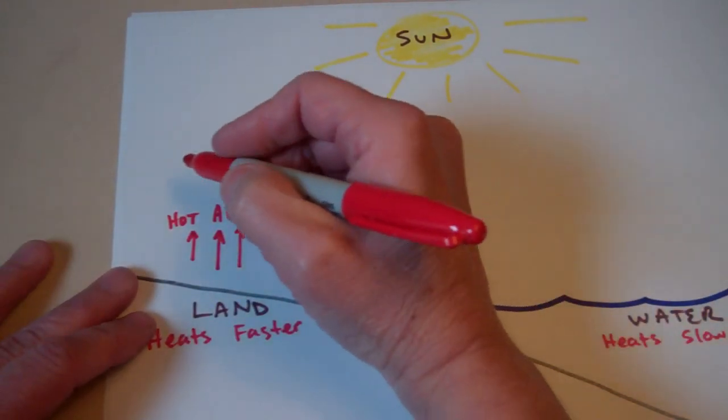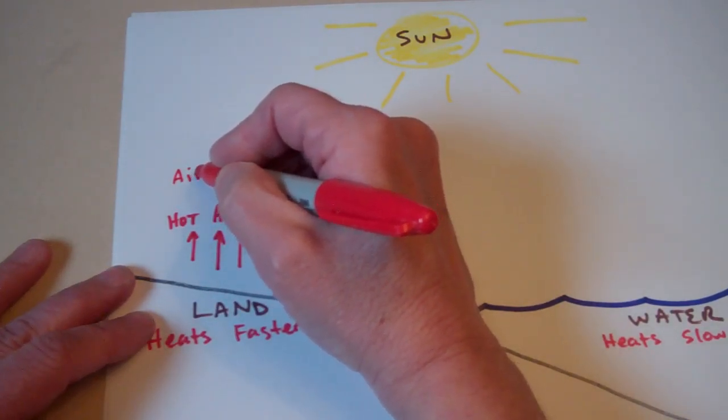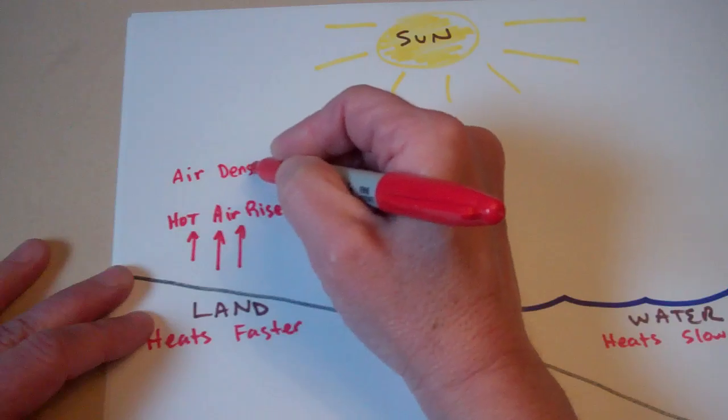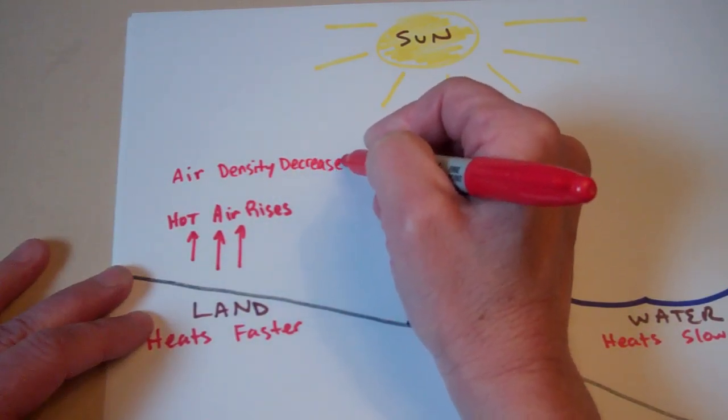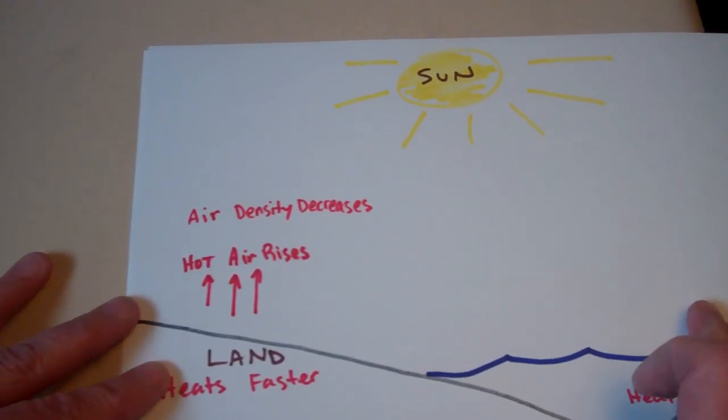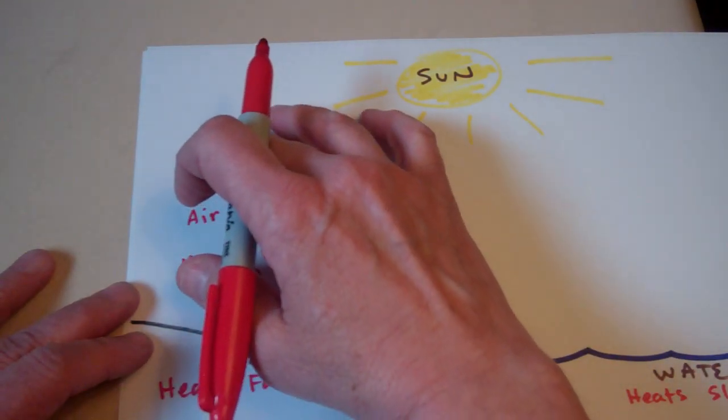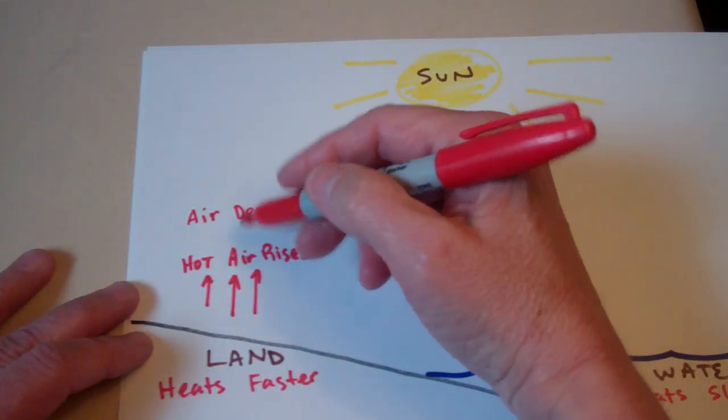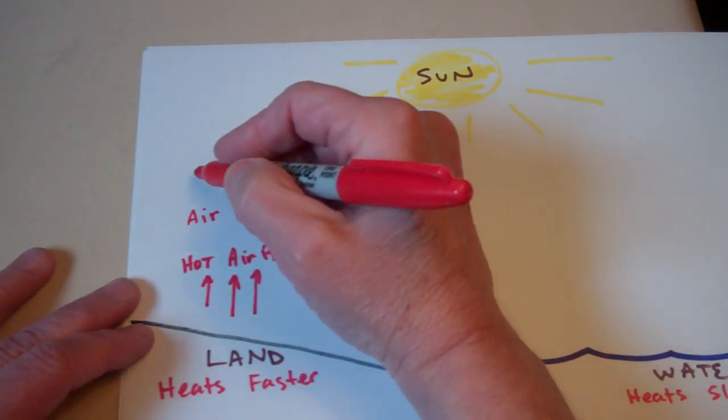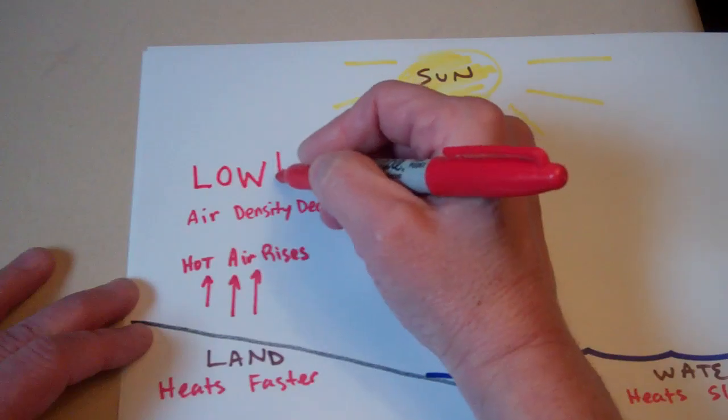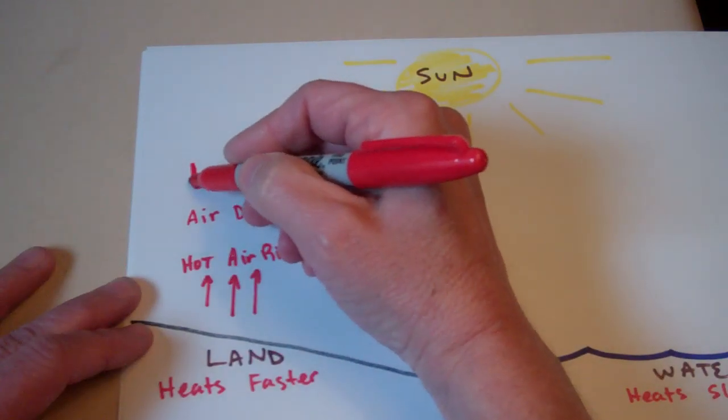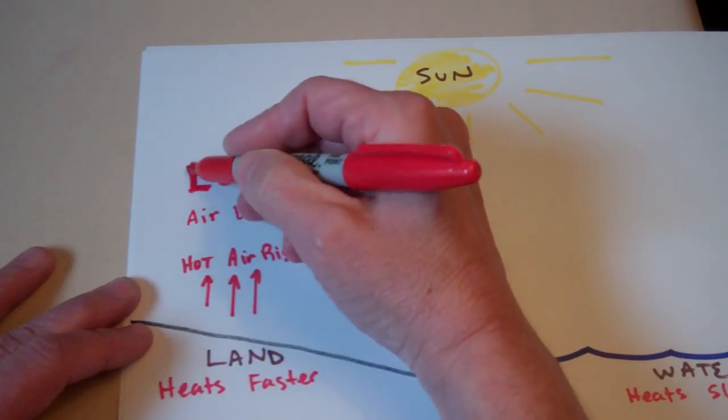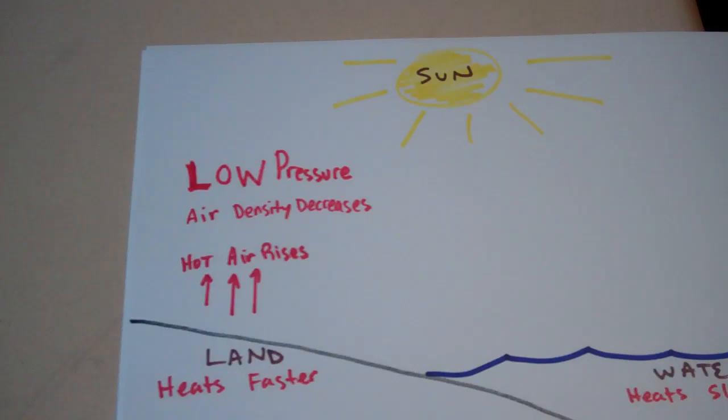So the air density decreases. Now, what we call that in weather and atmosphere when you have the density of air decreasing, meaning the molecules are going up, up, up. You have few air molecules here because they're all going up. That's called a low pressure area. That's really important to write down. A lot of times in weather they just show it with a big L for low. So low pressure.